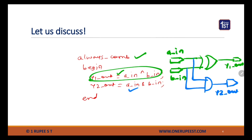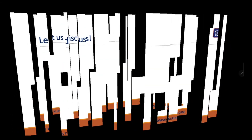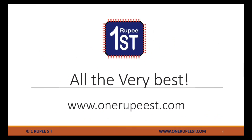Whenever we design any combinational logic using SystemVerilog, we should use either multiple continuous assignment constructs or the `always_comb` procedural block. I hope you now have a good understanding of combinational design and the synthesizable constructs used to model combinational logic. In the next session, we will discuss the procedural blocks used to model sequential design.